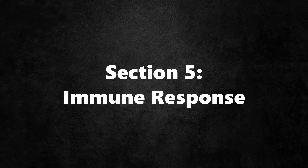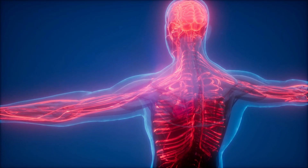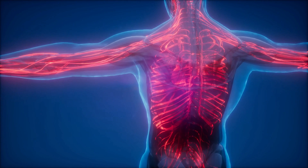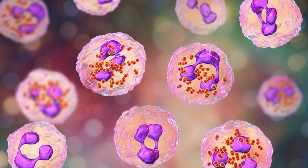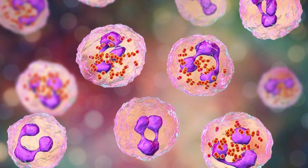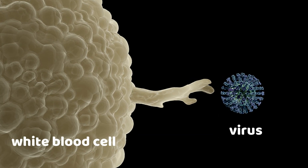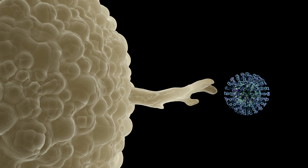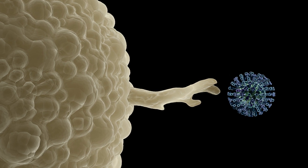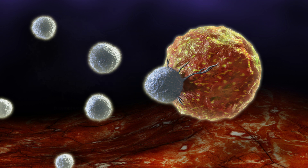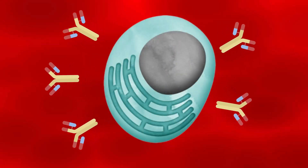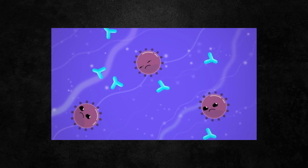Section 5: Immune Response. Our bodies possess a remarkable defense system to combat viral attacks. The immune response kicks into action when the body detects foreign invaders like viruses. Specialized cells recognize the presence of viral particles and launch an immune response to neutralize them. Some cells directly attack and destroy infected cells, while others produce antibodies that can tag and disable viruses for removal.